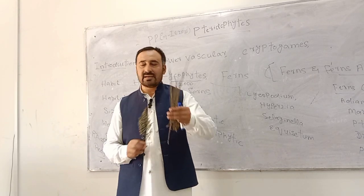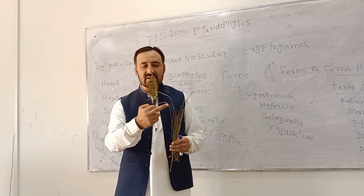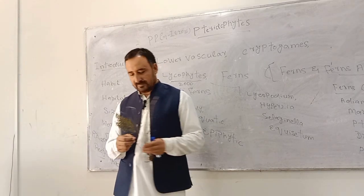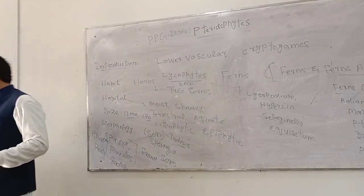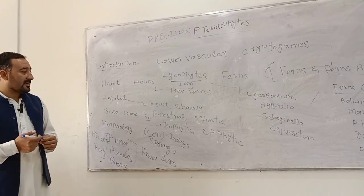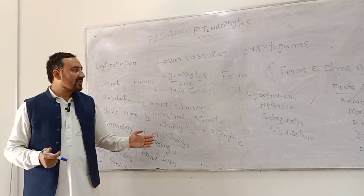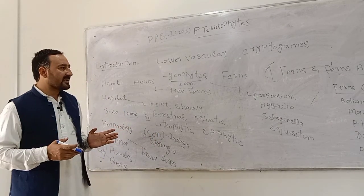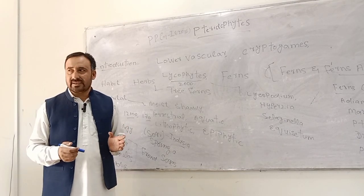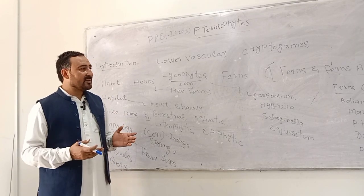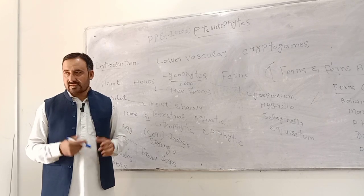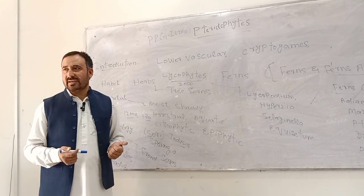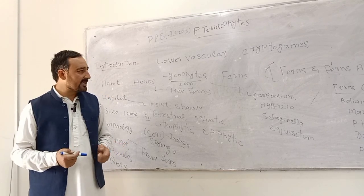They can reproduce by the help of strobili cones, which are found on their branches. They have a special character known as alternation of generations. Their plant body is known as the sporophyte — their roots, stem, and leaf — while the gametophyte produces spores. The sporophyte is formed by the help of mitosis, while the gametophyte is formed by meiosis.